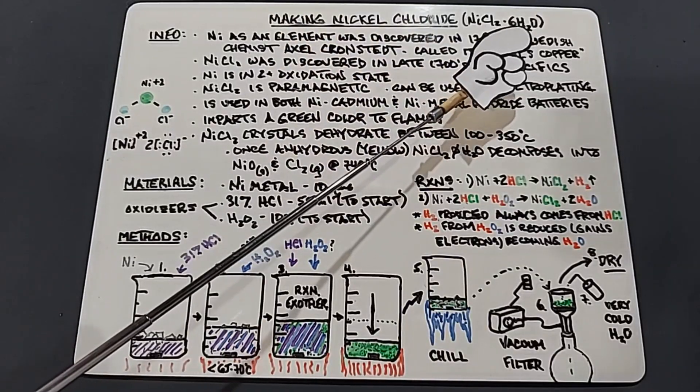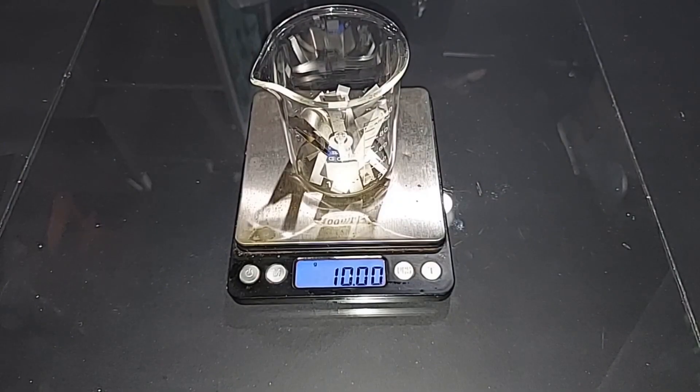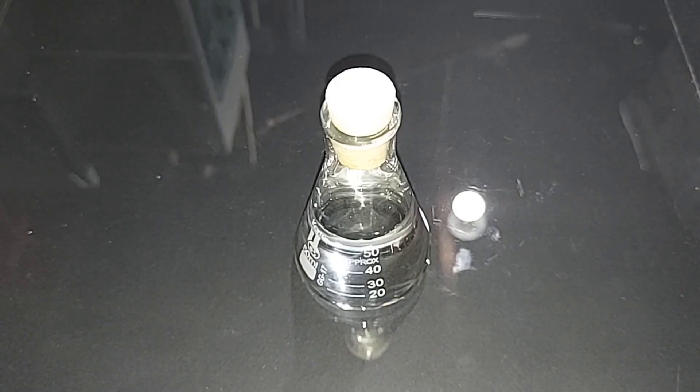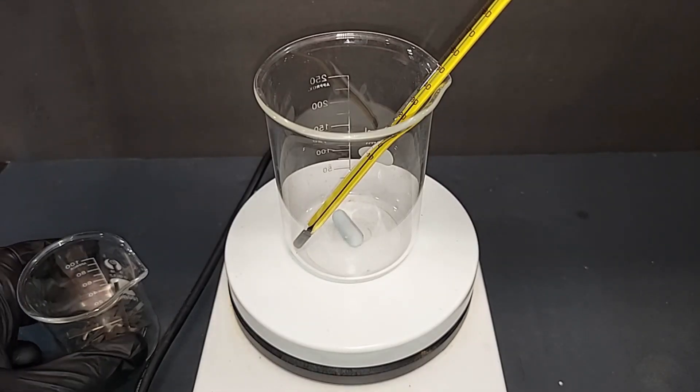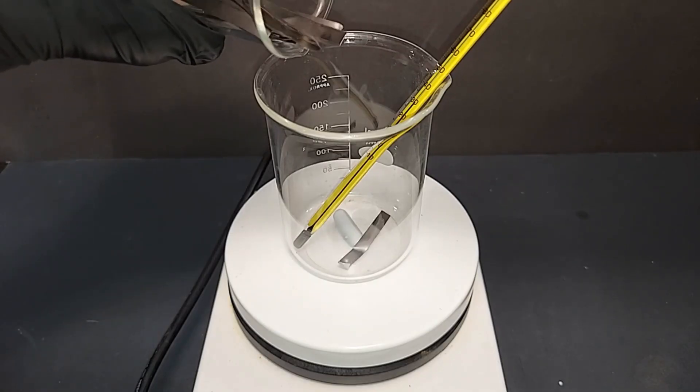Right now, 10 grams of solid nickel strips pre-weighed, 55 milliliters of 31% hydrochloric acid pre-measured. I'm using a 250 milliliter beaker here. You see it has the magnetic stir and the thermometer and they're ready to go. I'm just going to transfer those nickel strips into here.